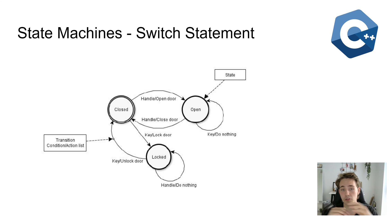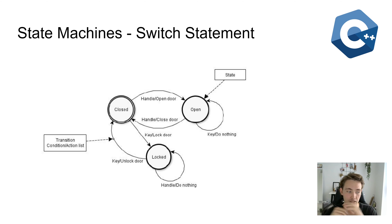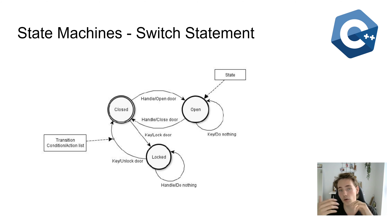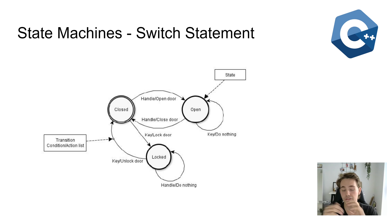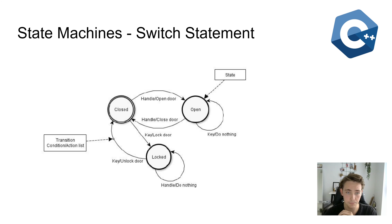Let's say we have a lot of different conditions or states that our program can be in. We could have several if statements — if state is this, if state is this, if state is this — but when we have more than around three if statements it gets really complicated fast. Instead of using a lot of if statements, we can go over to the switch statement, where we can check several conditions at the same time.